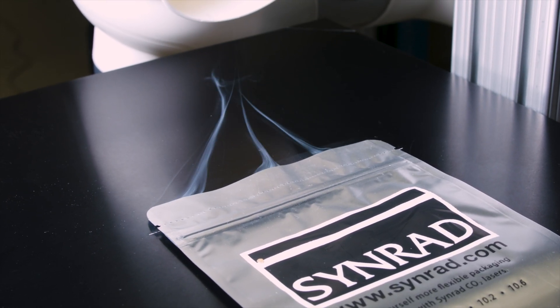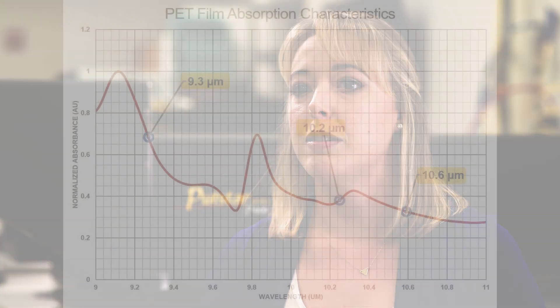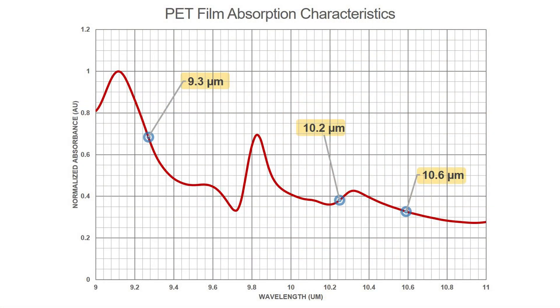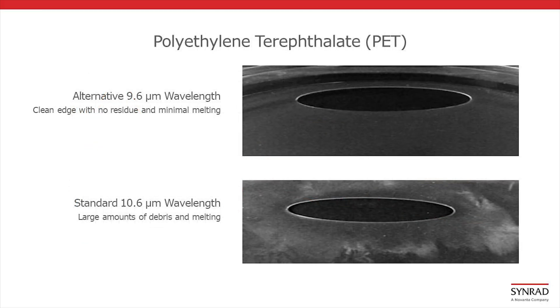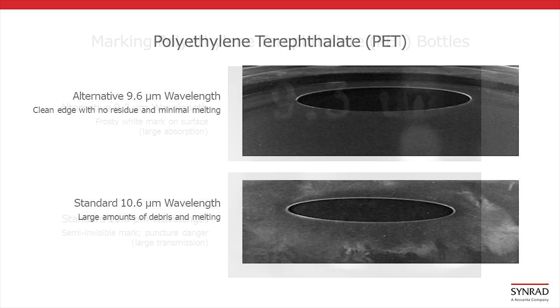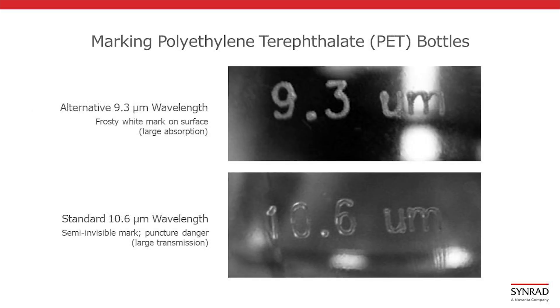CO2 lasers are available in different wavelengths, commonly 9.3, 10.2, and 10.6 microns. When the wavelength is matched to the target material's absorption characteristics, results are typically higher quality and the application can be processed at higher speeds.